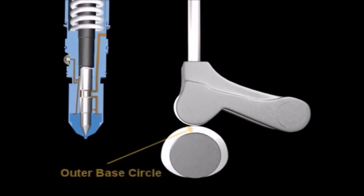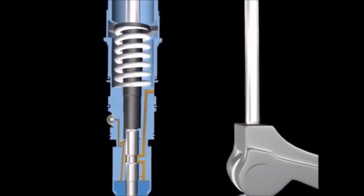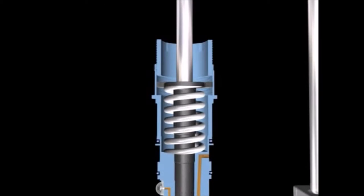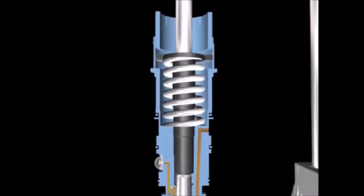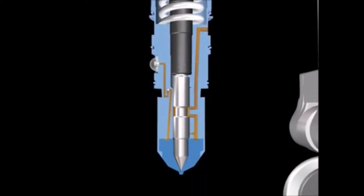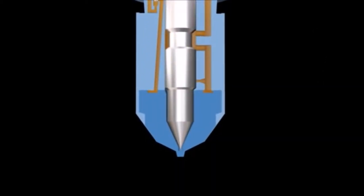When the cam follower roller is on the outer base circle, the downward movement of the injector plunger has overcome the injector return spring, closed the metering orifice, and injected the metered fuel into the combustion chamber. The injector plunger is now seated in the injector cup.